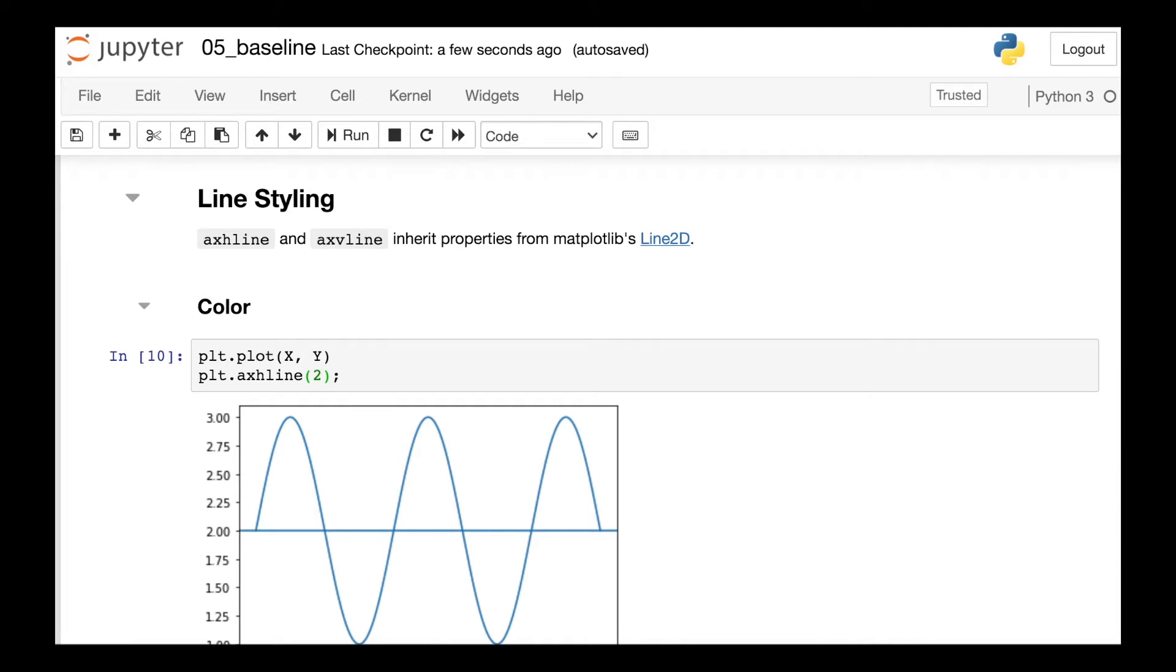In the baseline figures I just showed you, I did quite a bit of styling for those baselines to show up appropriately. So here are some of my very favorite styling properties. So axhline and axvline both inherit properties from Matplotlib's Line2D. So you can check out the docs if you want to see more options, but let me just show you some of my favorite properties.